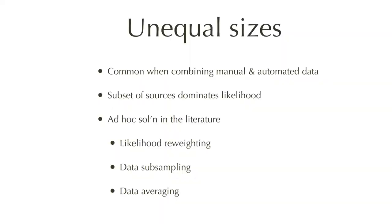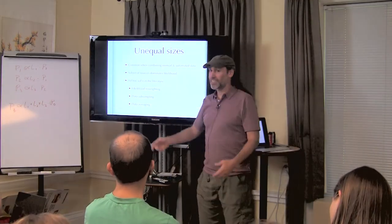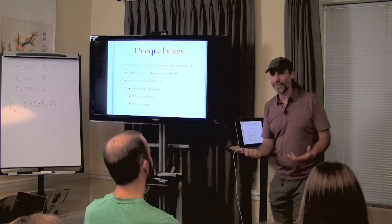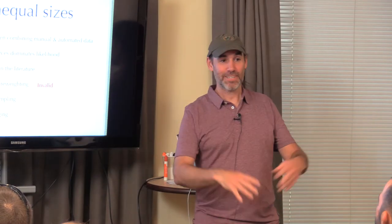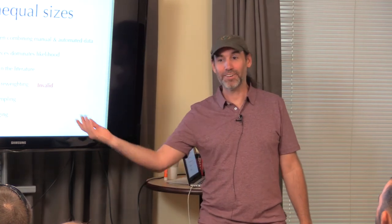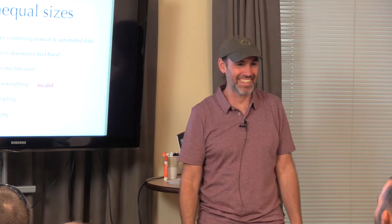The existing literature is full of ad hoc solutions: multiplying likelihoods by arbitrarily chosen numbers to make one data set more important, or subsampling or averaging the data to bring them into balance. But subsampling or averaging throws out information you actually have. And multiplying likelihoods by arbitrary numbers is technically invalid — it affects not just your mean but your confidence intervals. If I measure 10 observations but multiply my likelihood by 100, my confidence intervals look great, but I've just artificially pretended I have 100 times more information than I actually do.